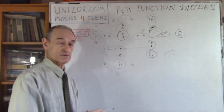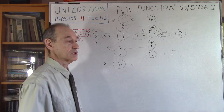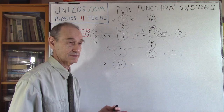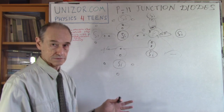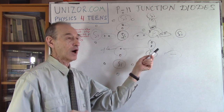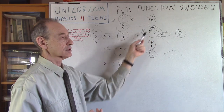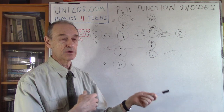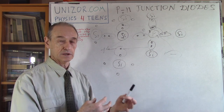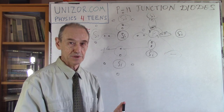With a small voltage it doesn't really conduct electricity, but with a substantial voltage — we're talking about 3 to 5 volts — it does. It also depends on how many impurities have been introduced. The more holes or extra electrons in the P-type or N-type, the better the conductivity.